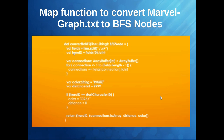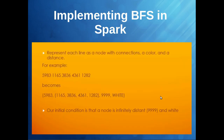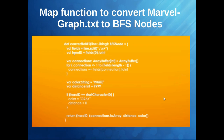Now we are going to write a method called convertToBFS. It will take each line of our raw dataset and return a BFS node. What we do is split the line using a regular expression that splits on whitespace, since our text file is space-separated. The first field becomes the hero ID, converted to int. The rest of the fields are the connection IDs.